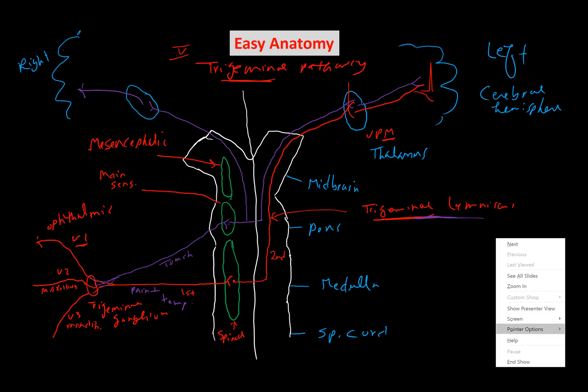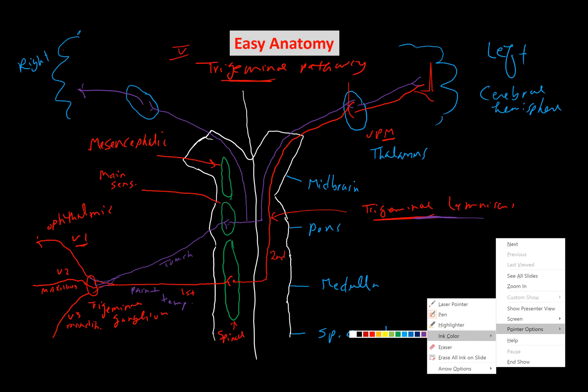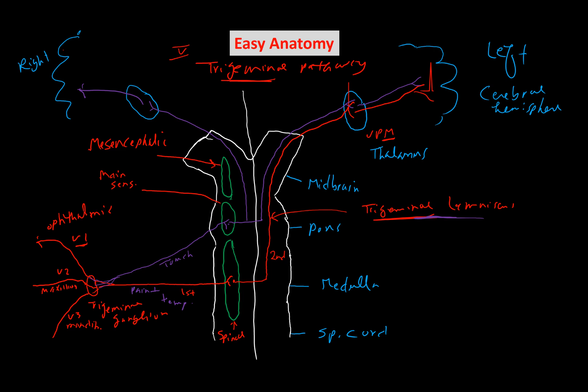Now, how about proprioception? Proprioception usually refers to the position of joints. Which joint is located in the head area? The quick answer is the temporomandibular joint — the TMJ. Its position is recognized through a unique pathway. Among the three divisions, V3 is the one supplying the TMJ, since V3 is the mandibular division.